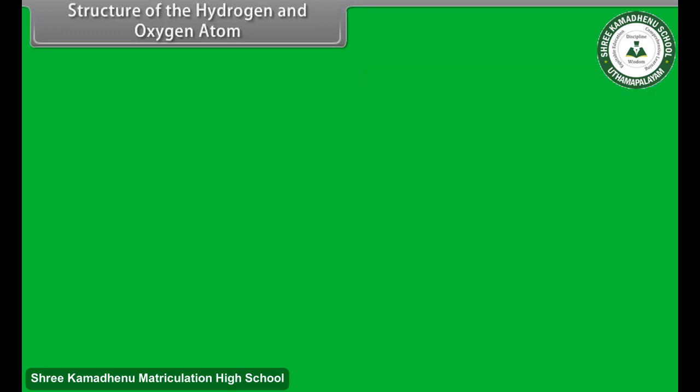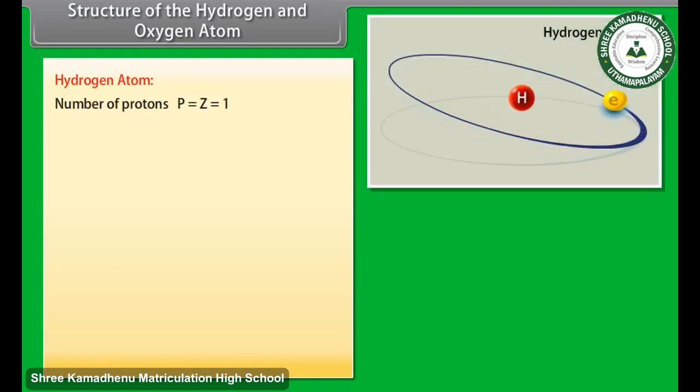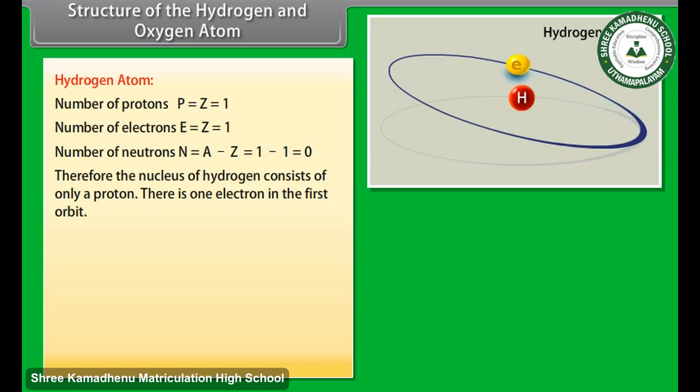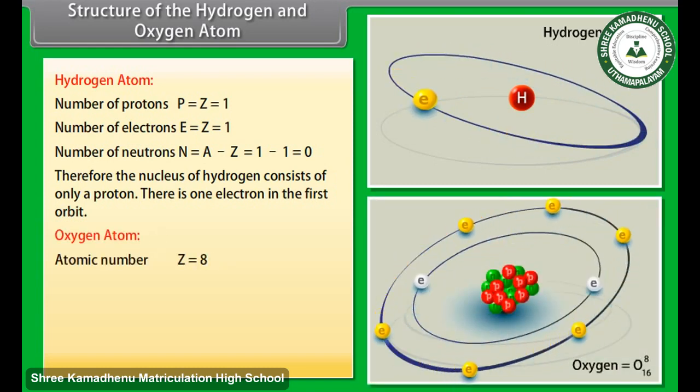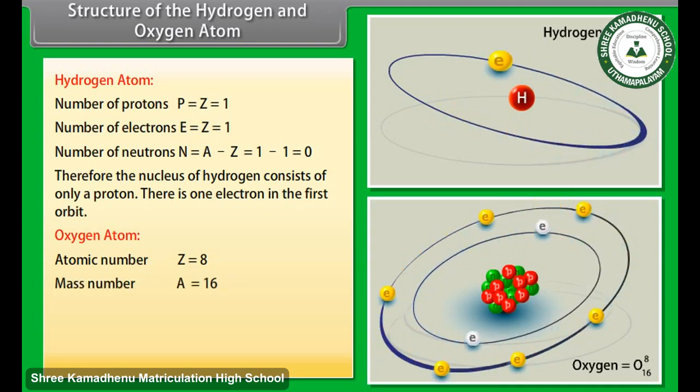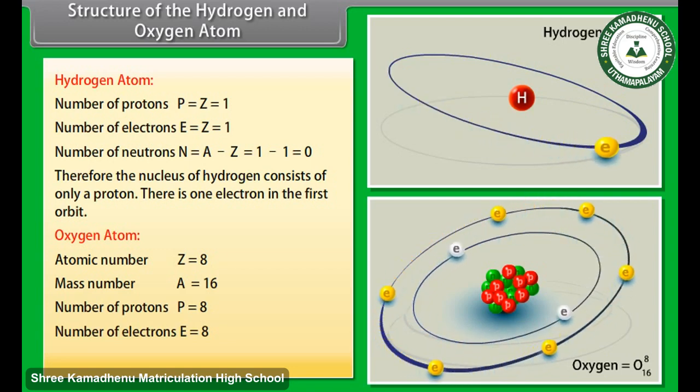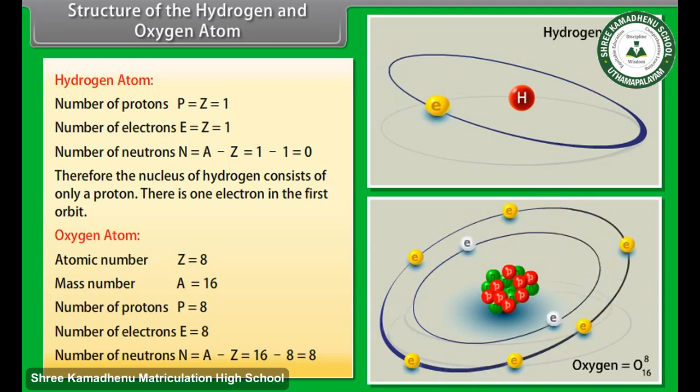Structure of the Hydrogen and Oxygen Atom. Hydrogen Atom: Number of protons P is equal to Z is equal to 1. Number of electrons E is equal to Z is equal to 1. Number of neutrons N is equal to A minus Z, which is equal to 1 minus 1, which equals 0. Therefore, the nucleus of hydrogen consists of only a proton. There is one electron in the first orbit. For oxygen, the number of neutrons equals 16 minus 8, which is equal to 8.